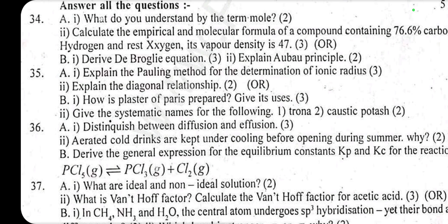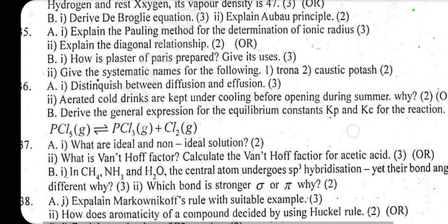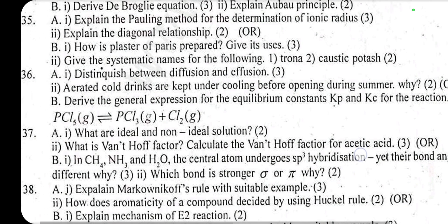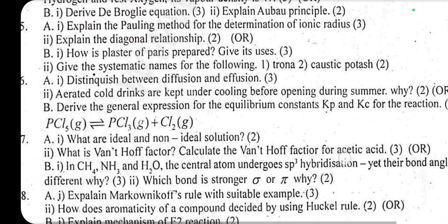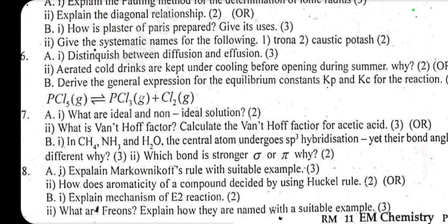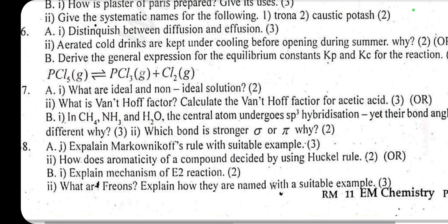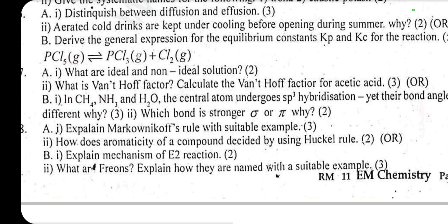Plaster of Paris — uses (3 marks). Systematic names: Trona is a mixture of sodium carbonate and sodium bicarbonate; caustic potassium is potassium hydroxide. Distinguish between diffusion and effusion. Reason: aerated cold drinks are kept under cooling before opening during summer. Derive the general expression for equilibrium constants Kp and Kc for PCl5 dissociation. What are ideal and non-ideal solutions? What is the van't Hoff factor, and calculate it for a given solute?